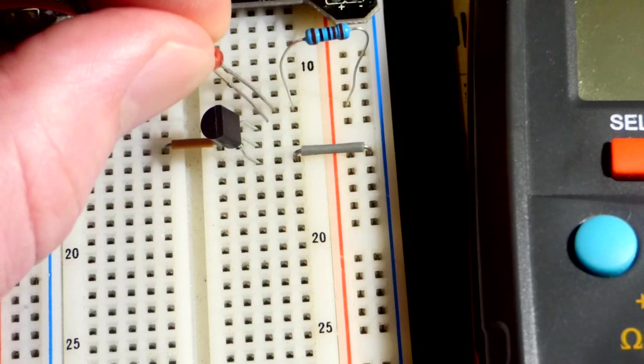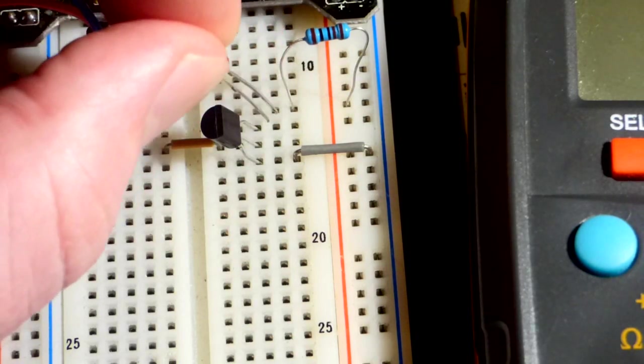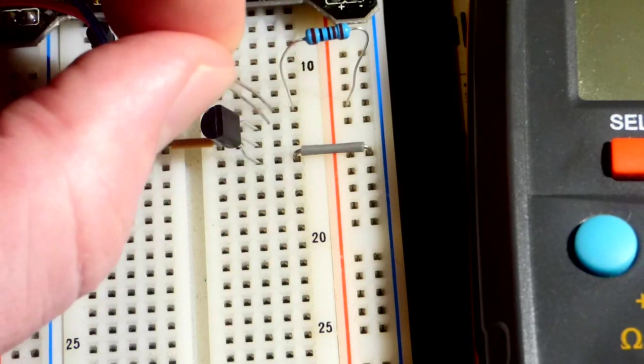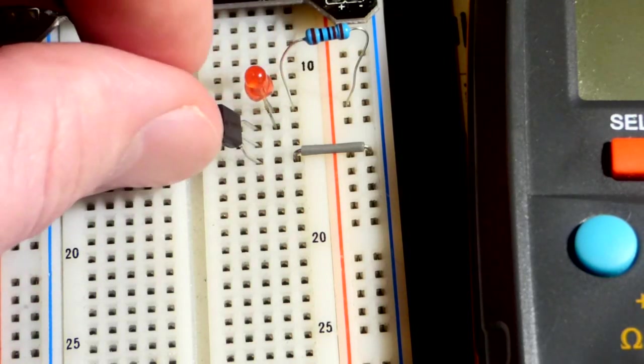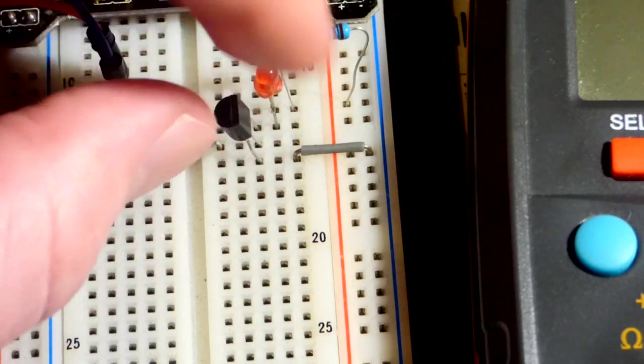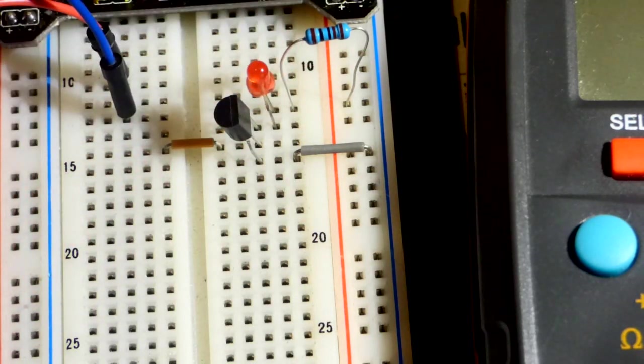So the long lead, the anode, needs to be more positive. Short lead, the cathode, needs to be more negative for it to conduct and light up. If you put it in backwards, it's just going to block any voltage you put across to it well above 5 volts.